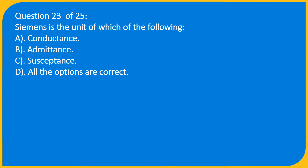Question 23 of 25: Siemens is the unit of which of the following? A. Conductance, B. Admittance, C. Susceptance, D. All the options are correct. Answer: D. All the options are correct.